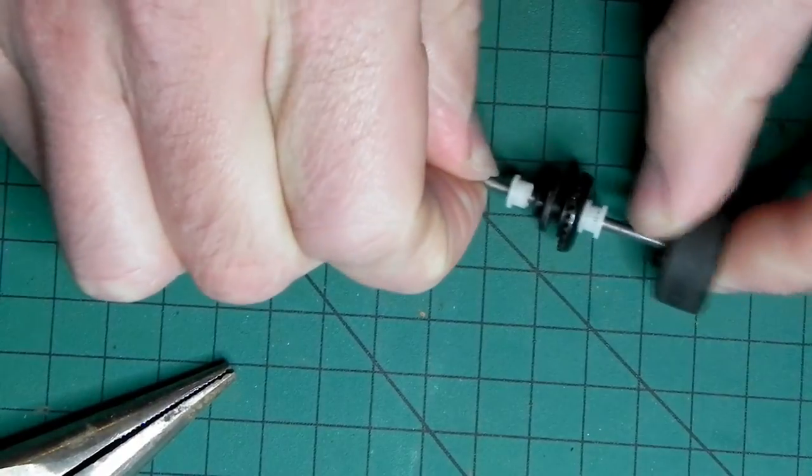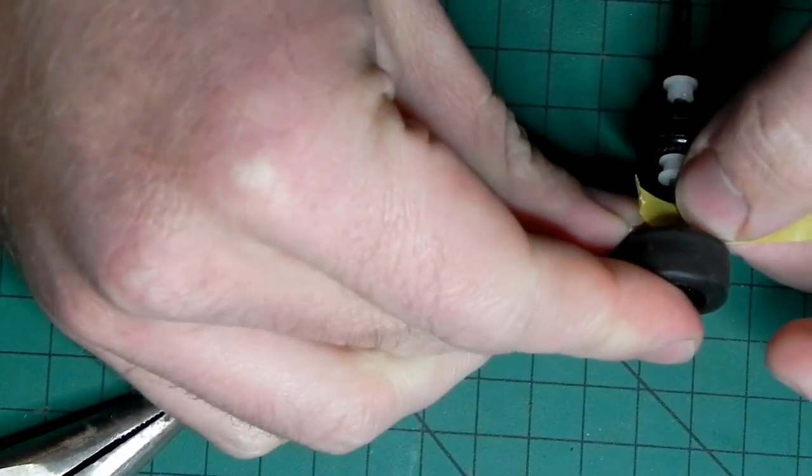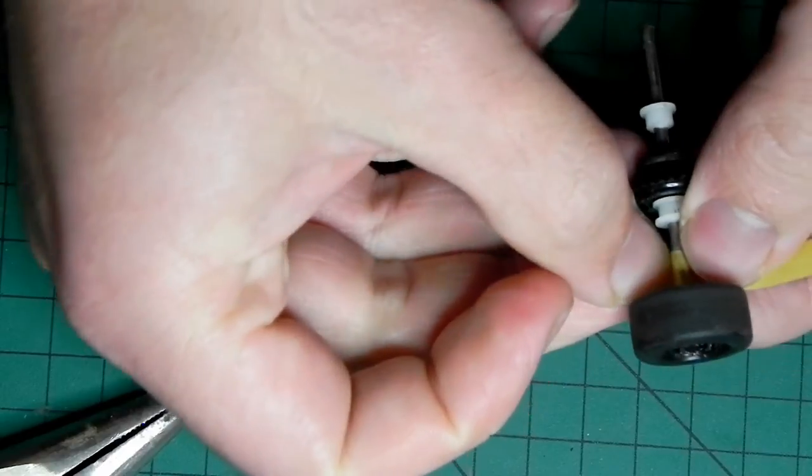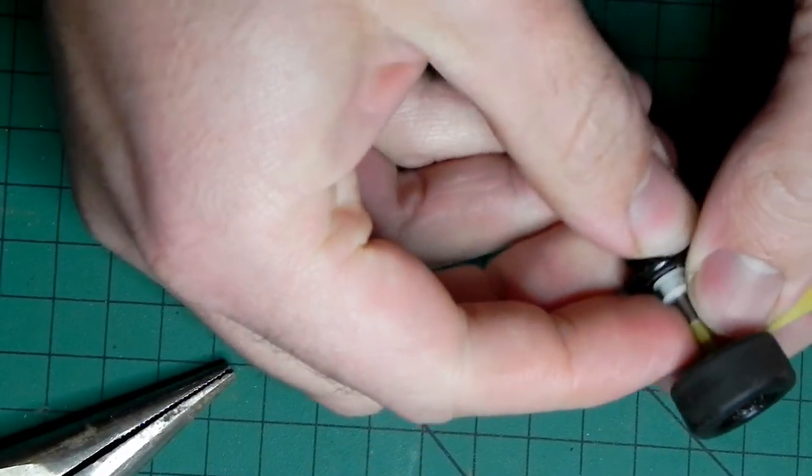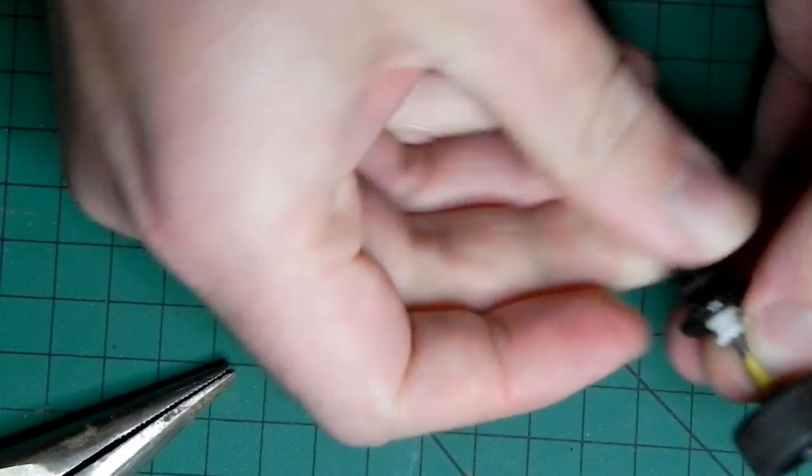All I'm going to do is stick a wheel on and mark where that wheel is using a piece of masking tape. This is Tamiya Modellers masking tape if you wondered, you probably didn't.